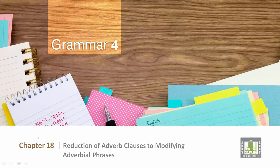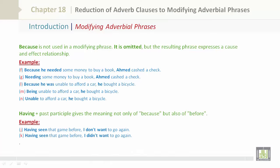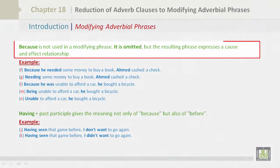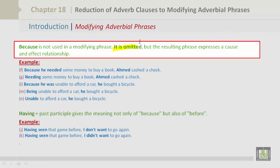Grammar 4, Chapter 18: Reduction of Adverb Clauses to Modifying Adverbial Phrases. Because is not used in a modifying phrase — it is omitted. But the resulting phrase still expresses a cause and effect relationship.